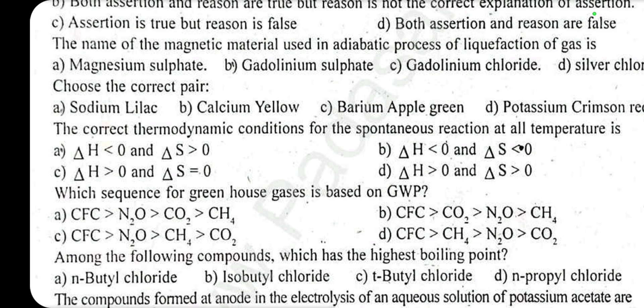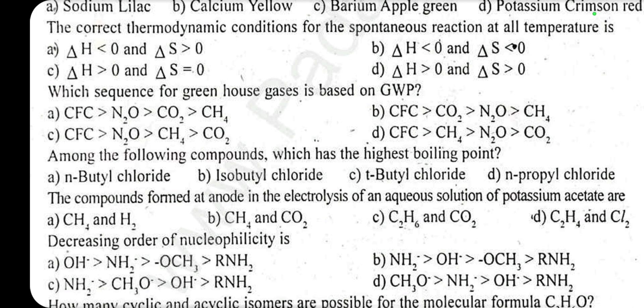Which sequence of greenhouse gases is based on Global Warming Potential (GWP)? Answer C: CFC (chlorofluorocarbon), then nitrous oxide, then methane, then carbon dioxide — in decreasing order of GWP.